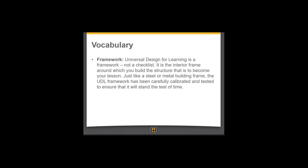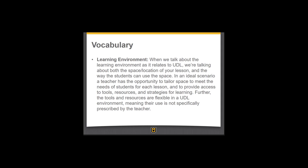To really understand UDL, you need to understand the vocabulary that's centered around it. One of the major ideas of UDL is a framework. Universal Design for Learning is a framework — it's not a checklist. It is the interior framework around which you build the structure that will become your lesson. Just like a steel or metal building frame, the UDL framework has been carefully calibrated and tested to ensure that it will stand the test of time. Secondly, the Learning Environment. It's a common misconception that UDL is just incorporating technology into instruction. But if the technology options are too prescriptive, the technology can actually be a hindrance to learning. UDL is about access to a learning environment and overcoming barriers, so the learning environment should be mindfully constructed to be accessible for all students.